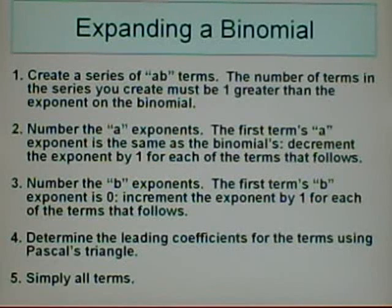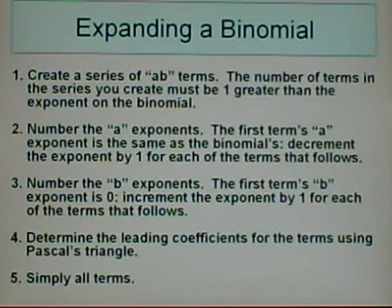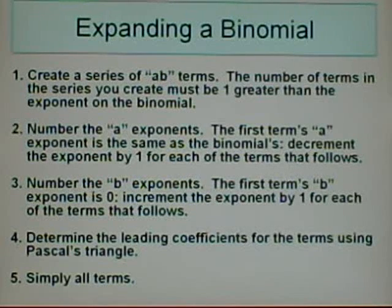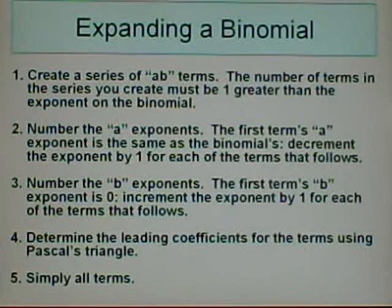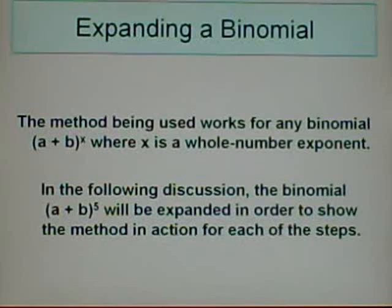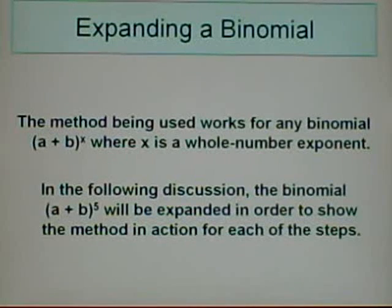There are five basic steps. Step 1: Create a series of AB terms. The number of terms in the series you create must be one greater than the exponent on the binomial. Step 2: Number the A exponents. Step 3: Number the B exponents. Step 4: Determine the leading coefficients for the terms using Pascal's triangle. Step 5: Simplify all terms. The method works for any binomial of the form A plus B raised to the X, where X is a whole number exponent. In the following discussion, the binomial A plus B raised to the fifth will be expanded to show the method in action for each of the steps.